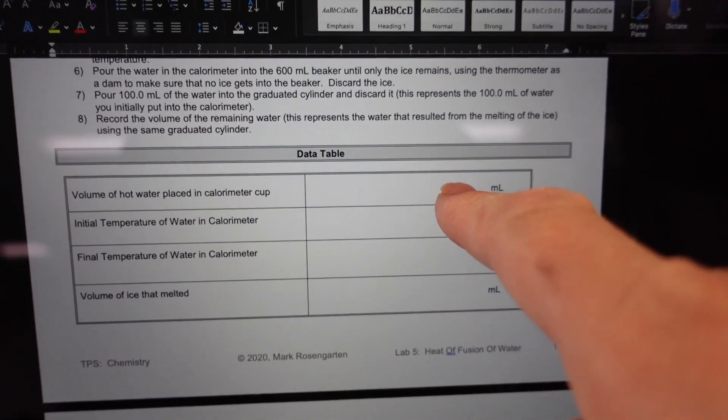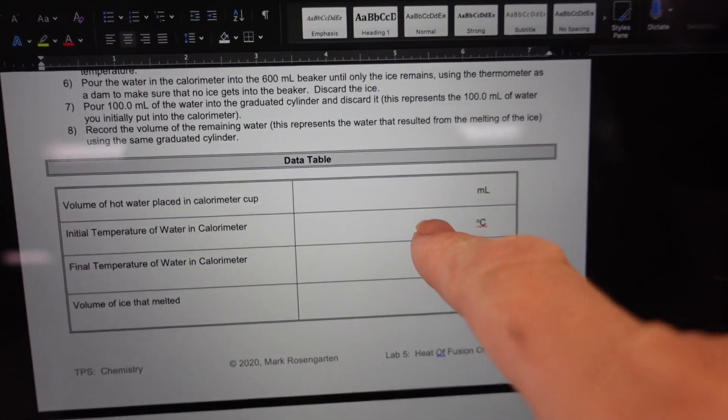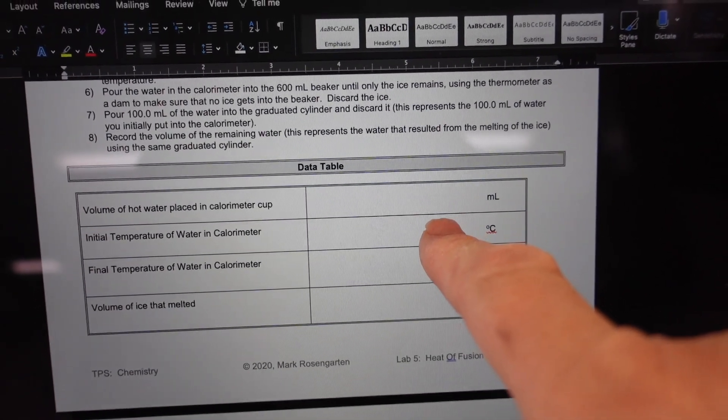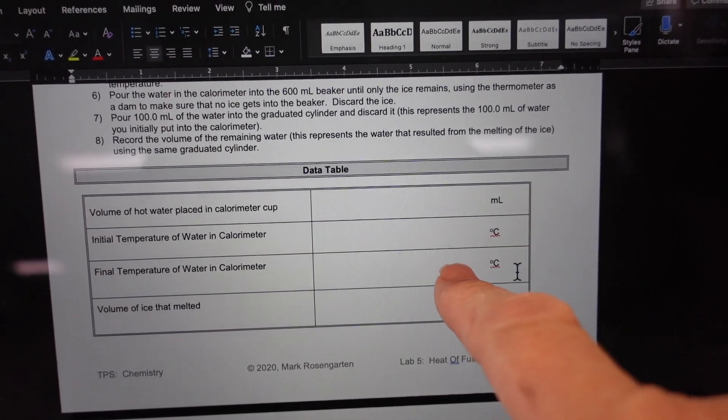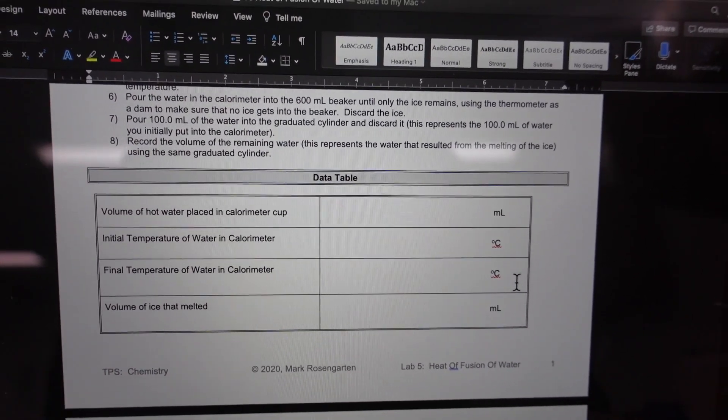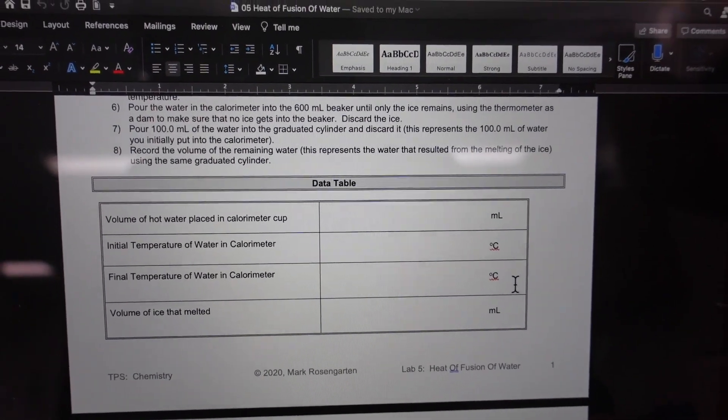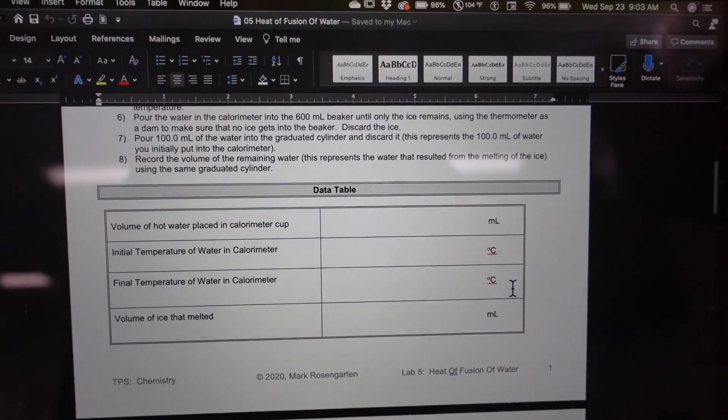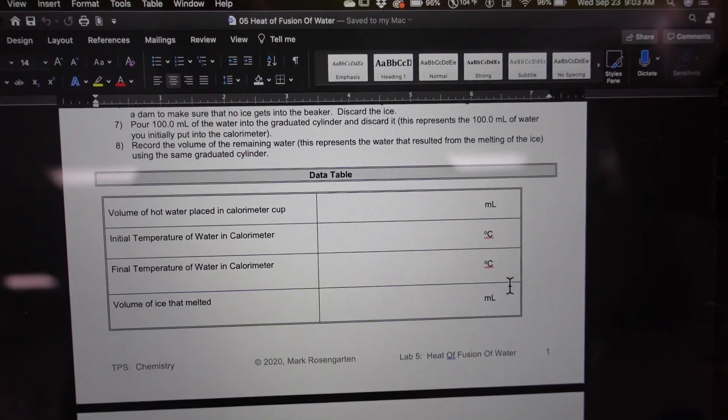Here is where you're going to record your data: the volume of the hot water in the calorimeter cup, the starting temperature of the water, the final temperature of the water, and the volume of ice that melted. Okay, let's go ahead and do the experiment.